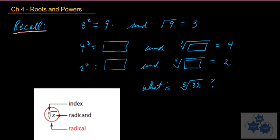3 squared is 9. We remember that 3 squared can also be written as 3 times 3 — that's what 3 squared means. We also know that the square root of 9 is 3. We talked about a square with area 9 units, which means the side lengths are 3. So we defined the square root as the side length.